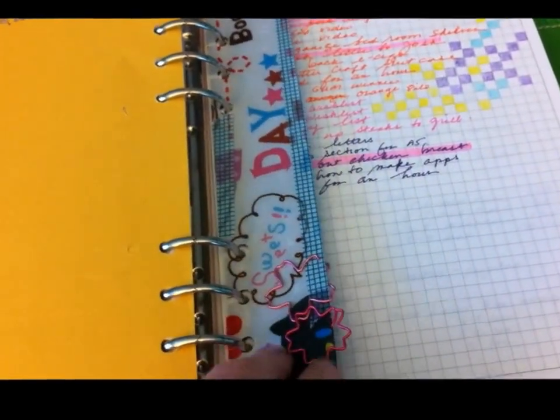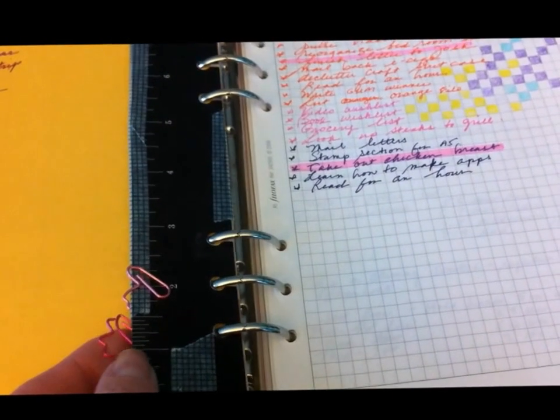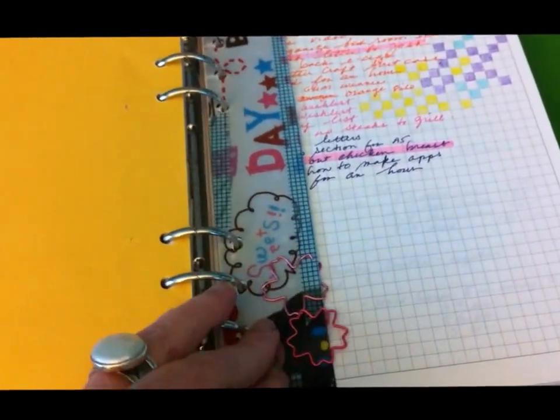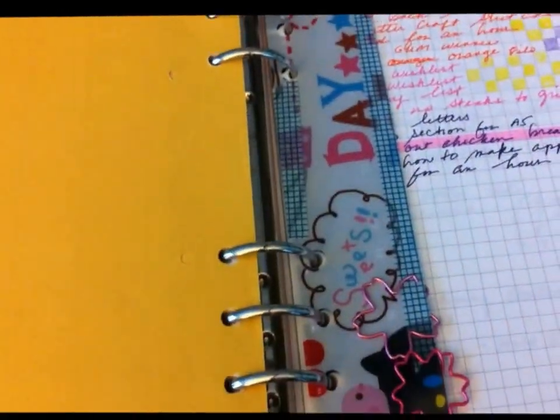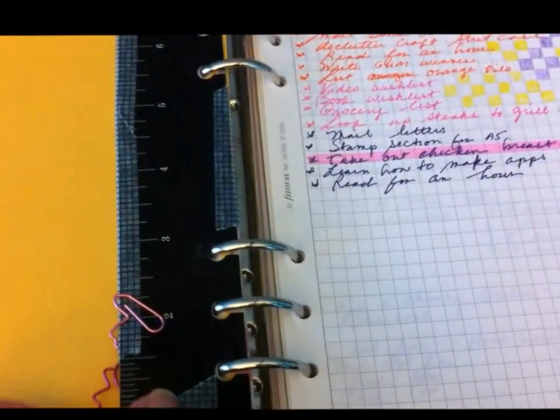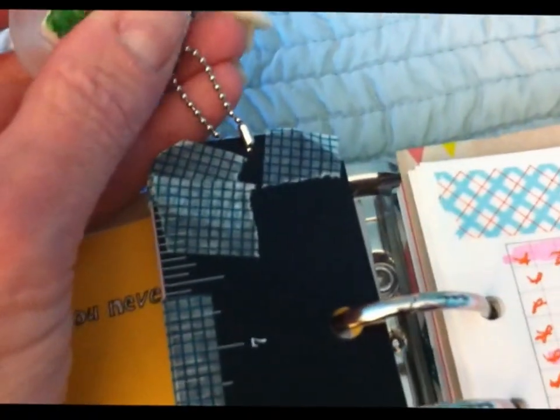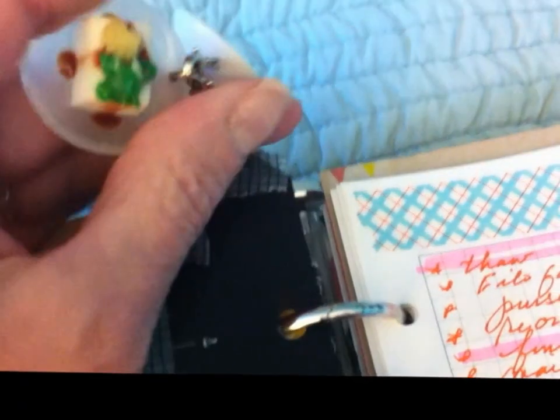This is a ruler. I used that same folder and actually covered a Filofax ruler because in the end this was just a little too flimsy for a ruler. So the back looks pretty cute, the front looks pretty good. The back is pretty much a mess here because I just used washi tape.